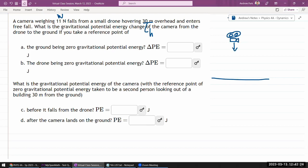That's going to fall down. It says some height h and it has mass. It has weight w. What is the gravitational potential energy change of the camera from the drone to the ground, if you take a reference point of ground being zero gravitational potential energy?